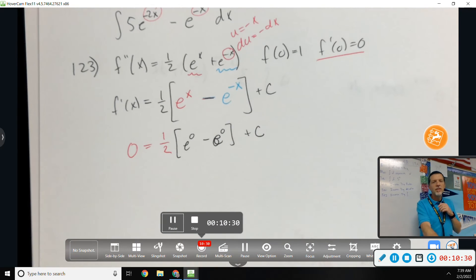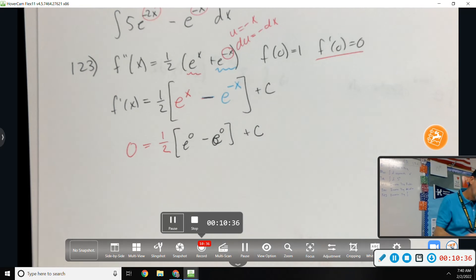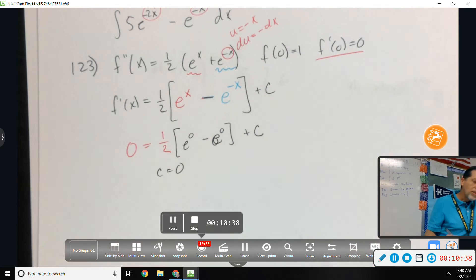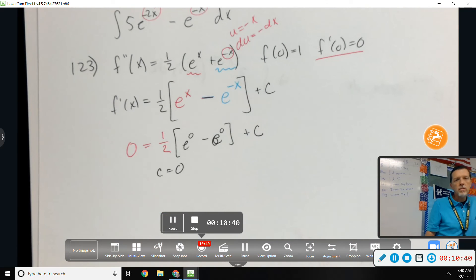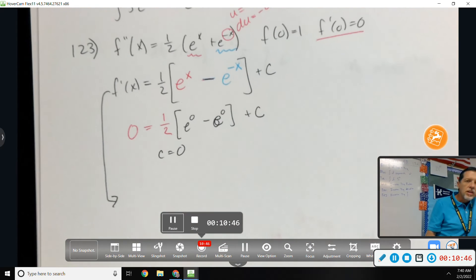So plugging in: 1 half times e to the 0 minus e to the 0 plus c. That was convenient of them to do for us, because e to the 0 is 1. 1 minus 1 is 0. So c is 0, or at least the first c. We know we're going to get another one here in a minute.